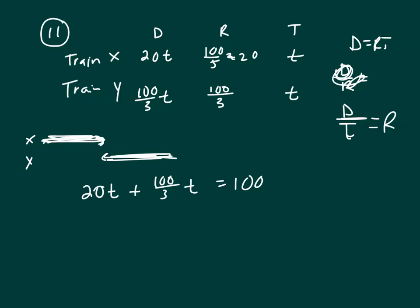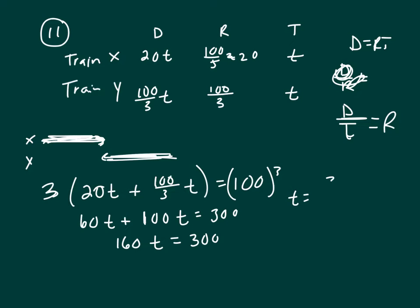Add the two distances together for the total distance. Let's clear our fractions by multiplying everything by 3. So that's 60T plus 100T equals 300. That's 160T equals 300. Divide both sides by 160. That's T equals 300 over 160.